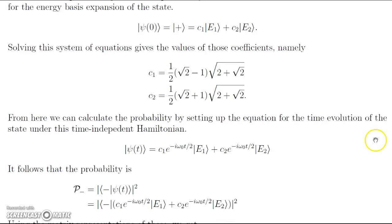From here we can calculate the probability just by setting up the equation for the time evolution state under the time-independent Hamiltonian. So we have the state ψ(t), which is equal to C_1 e^(-iω_0t/2) times our E_1 state plus C_2 times e^(-iω_0t/2) times our E_2 state.